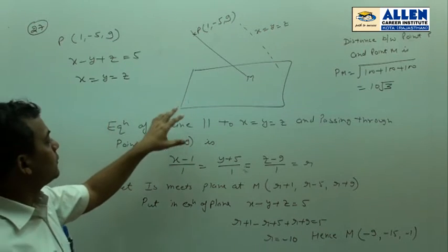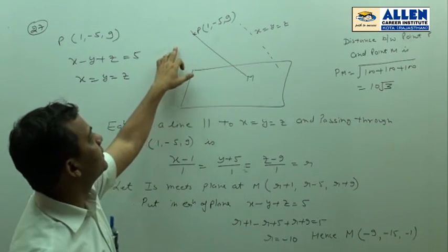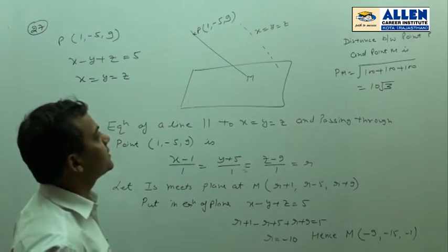So, first what we do, we write equation of a line which is parallel to line x equal to y equal to z and passing through point (1, -5, 9).